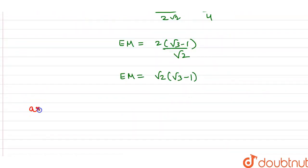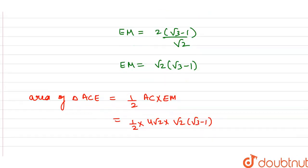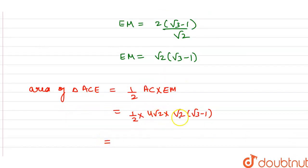So we can write area of triangle ACE equals half into AC into EM. Base into height. So this formula gives us half into 4√2 into 2(√3 - 1). So what value will we get? √2 into √2, 2 and 2 cancel out. So it equals 4(√3 - 1) cm².